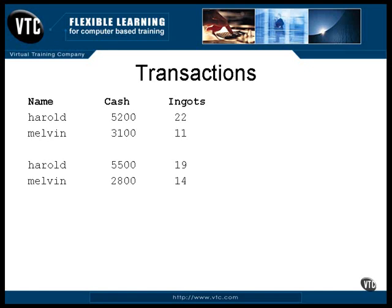For some reason, if the program were to crash, the database could be in a completely wrong state, like this. The data is now wrong and it conflicts with itself. Harold lost his ingots and got his money, but the money didn't come from anywhere, and the ingots didn't go anywhere. The numbers are wrong, and there's no quick way to fix it.